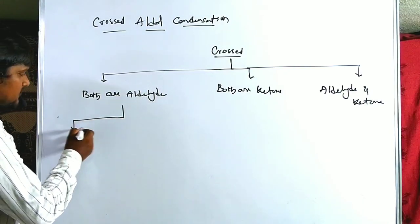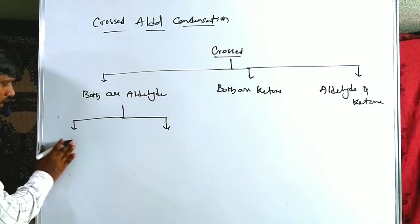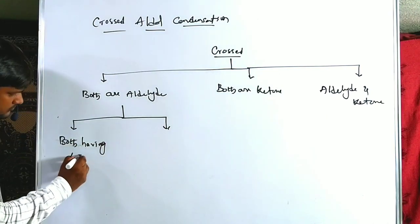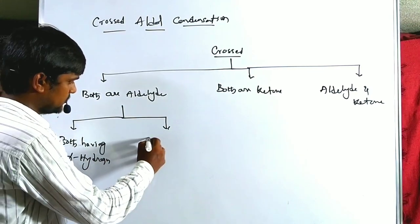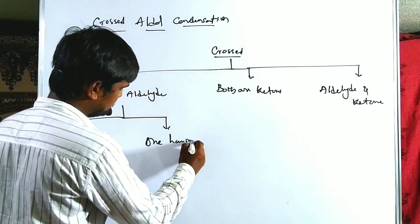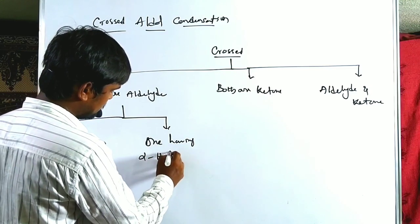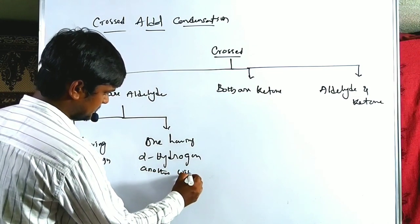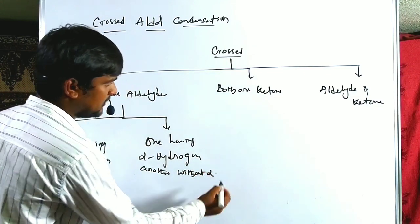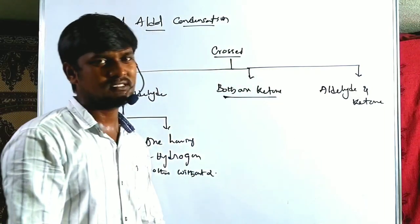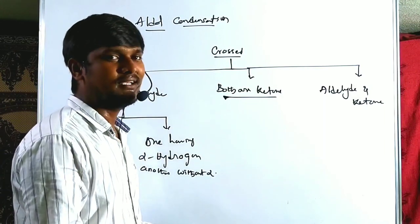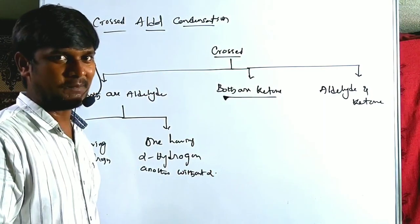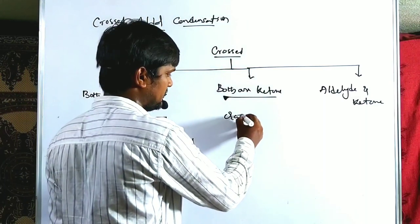So it again takes two types: both having alpha hydrogen, or another is without alpha hydrogen. Now here, both are ketones — so ketones are poor carbonyl acceptors, as we already discussed previously. Due to the poor acceptor capacity, the reaction is rarely attempted.